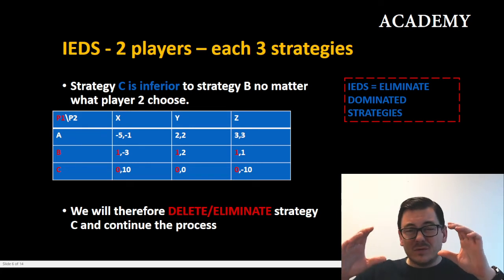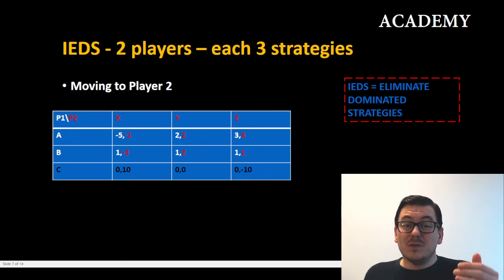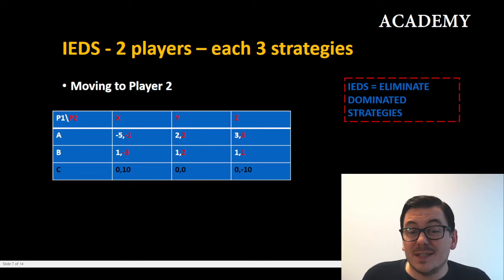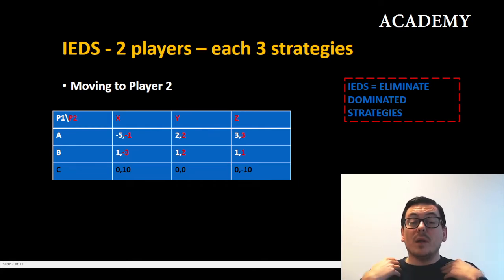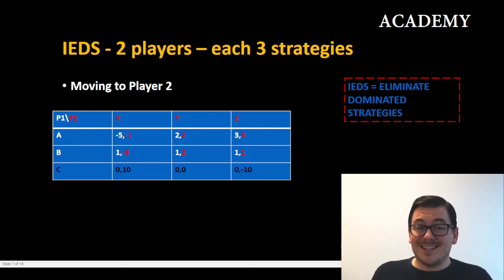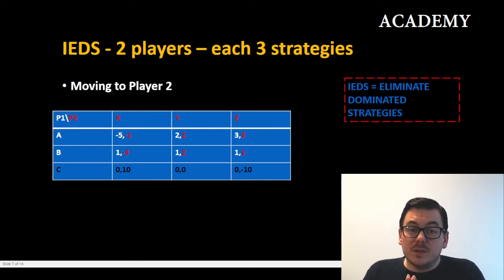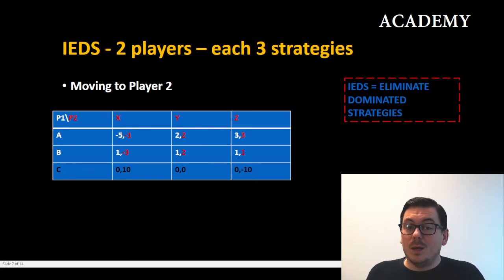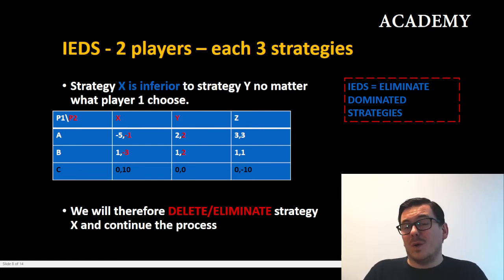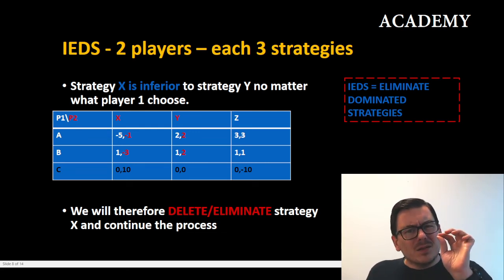Between A and B there's no inferior strategy, so we now change our focus to player two. I've already deleted strategy C by wiping it out with some black coloring. Now we look at the payoffs for player two, who has strategies X, Y, and Z. Comparing X with Y: X gives player two minus one or three, and Y gives two or two. X gives a negative number and Y gives a positive number, so X is inferior to strategy Y no matter what player one plays. Therefore we can delete strategy X.